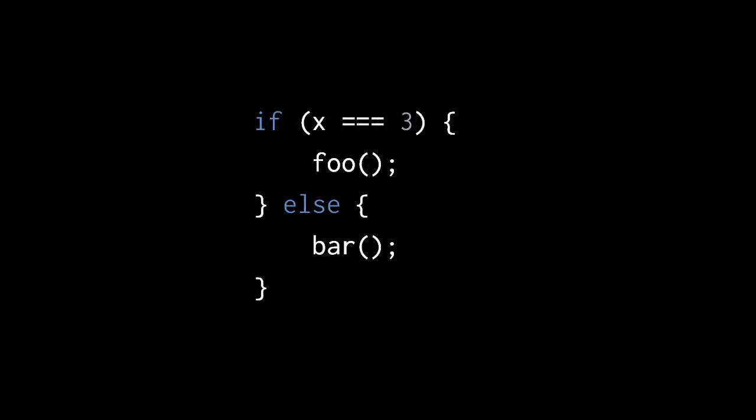So, for instance, here we have an if else with a condition x equals three, and so when x does not equal three, the function foo is called. Otherwise, the function bar is called.